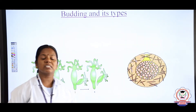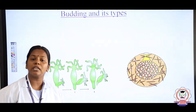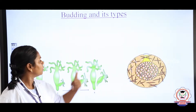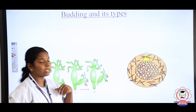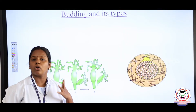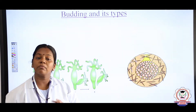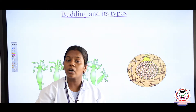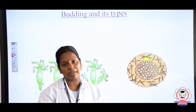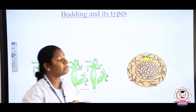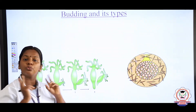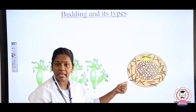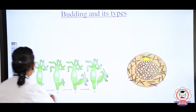Next we are going to study about budding — another method of asexual reproduction. What do you mean by budding? If an organism reproduces by means of producing buds, we call this budding. There are two types: one is exogenous and another is endogenous.